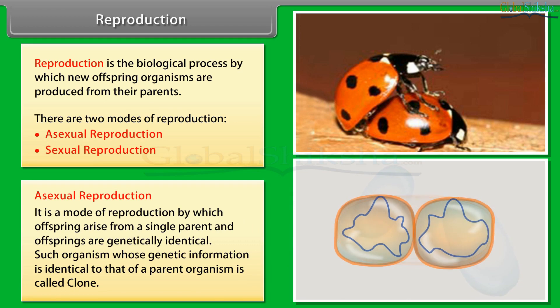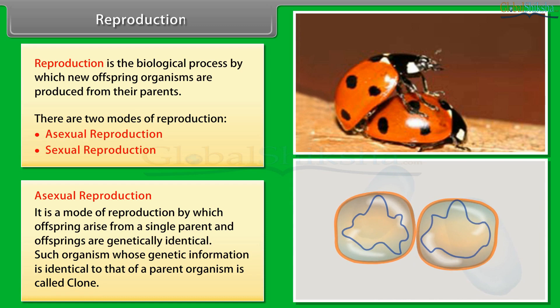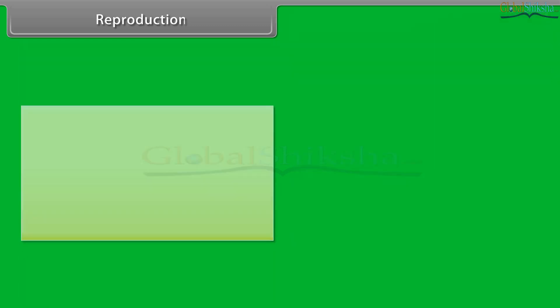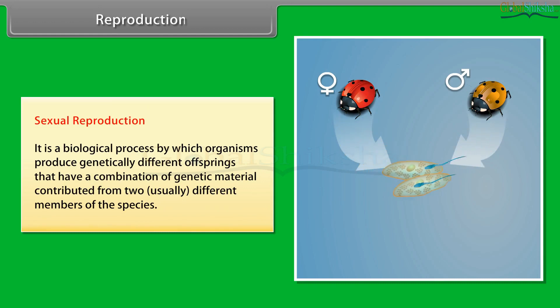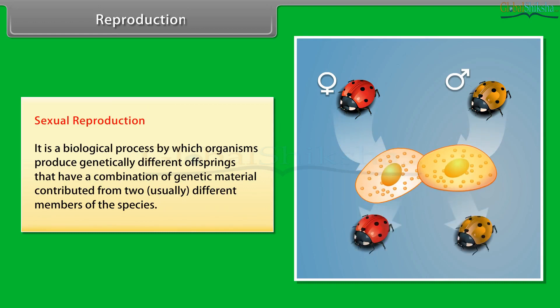Such organisms whose genetic information is identical to that of a parent organism are called clones. Sexual reproduction is the biological process by which organisms produce genetically different offsprings that have a combination of genetic material contributed from two usually different members of the species.